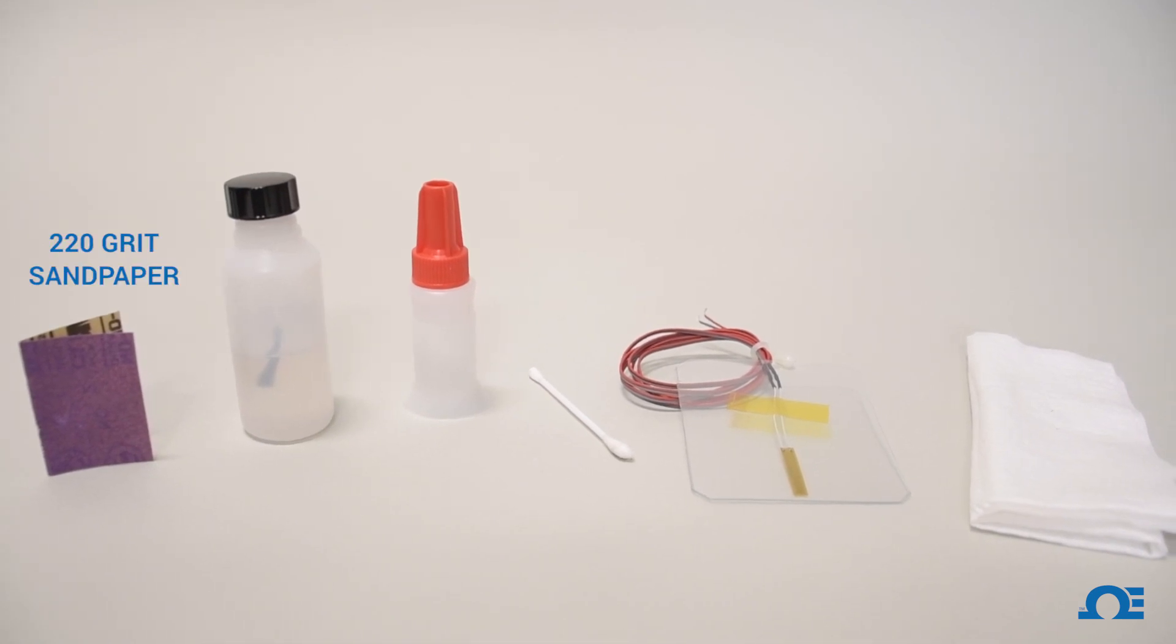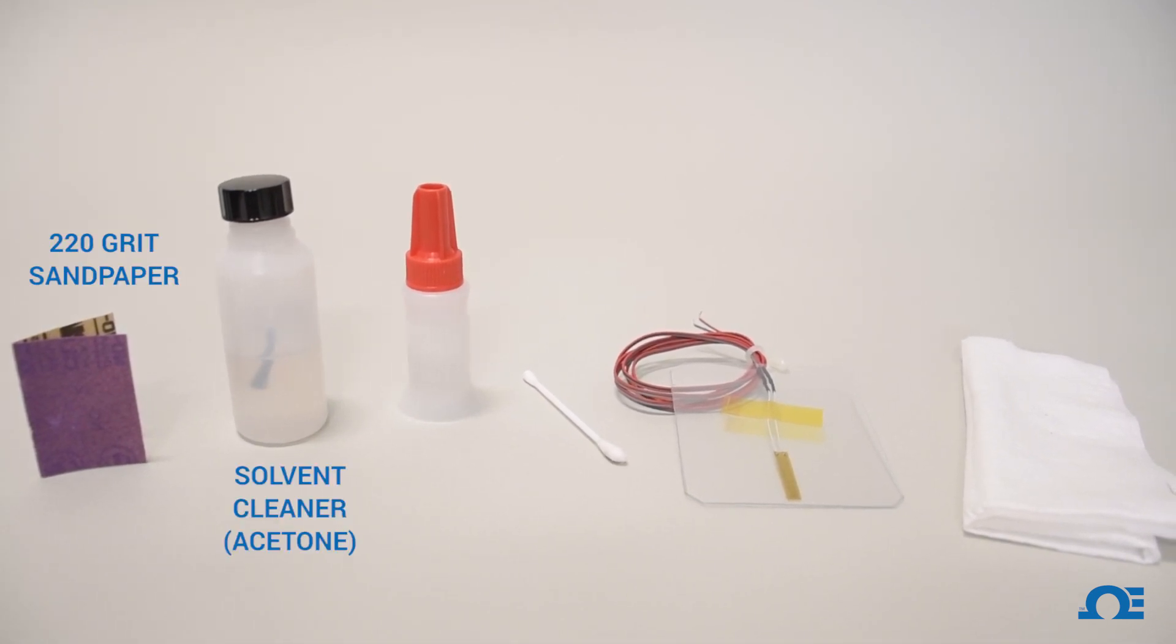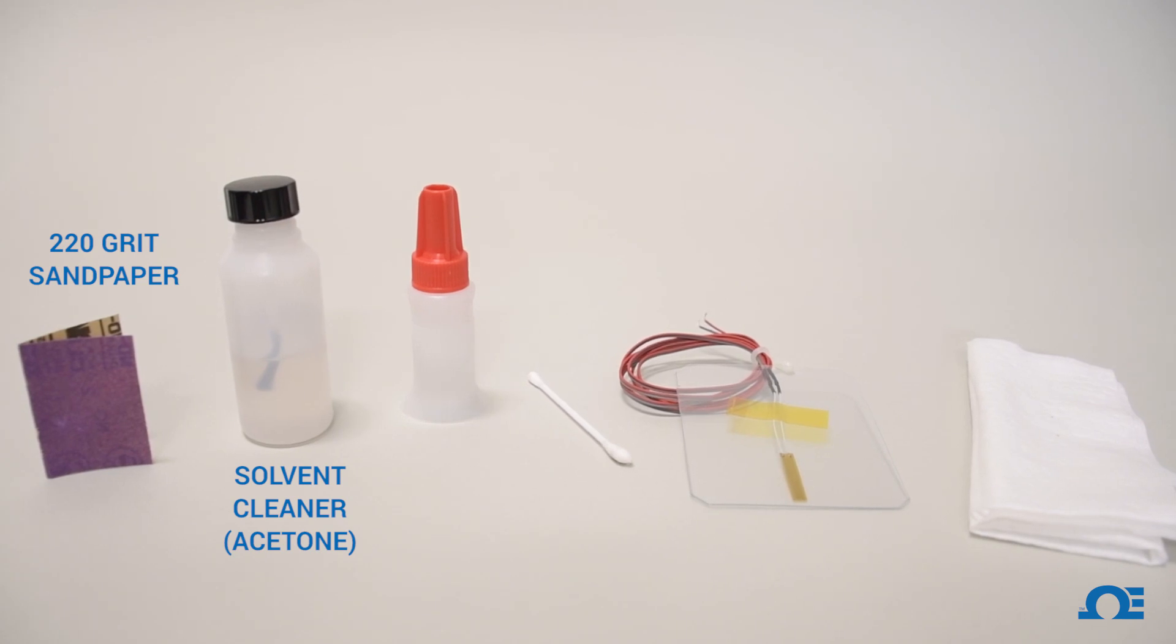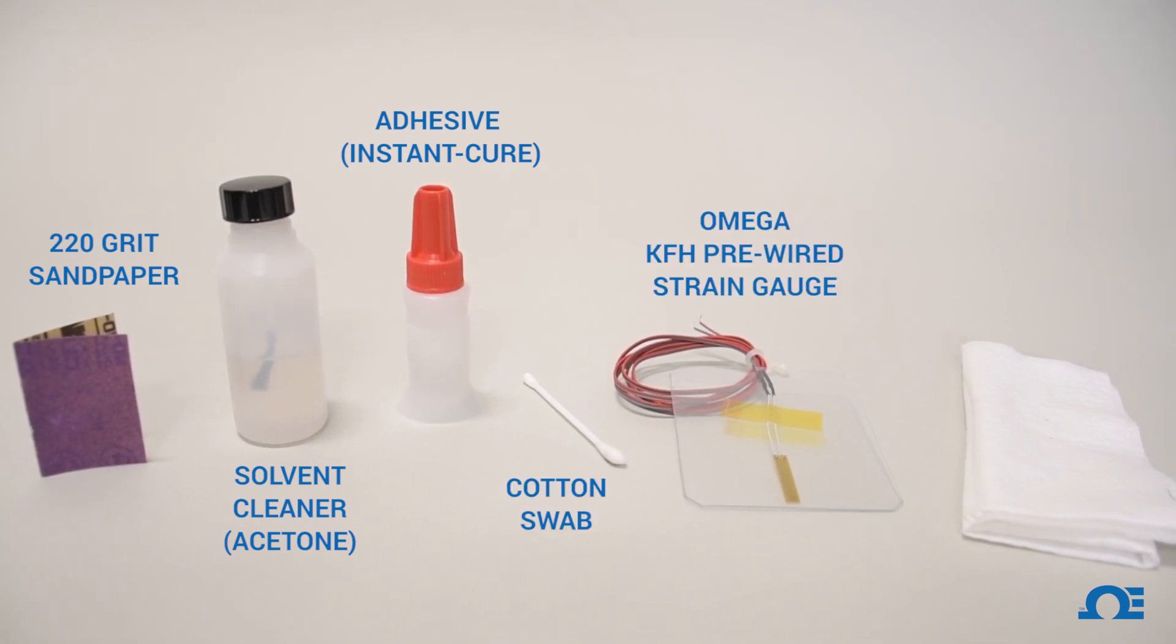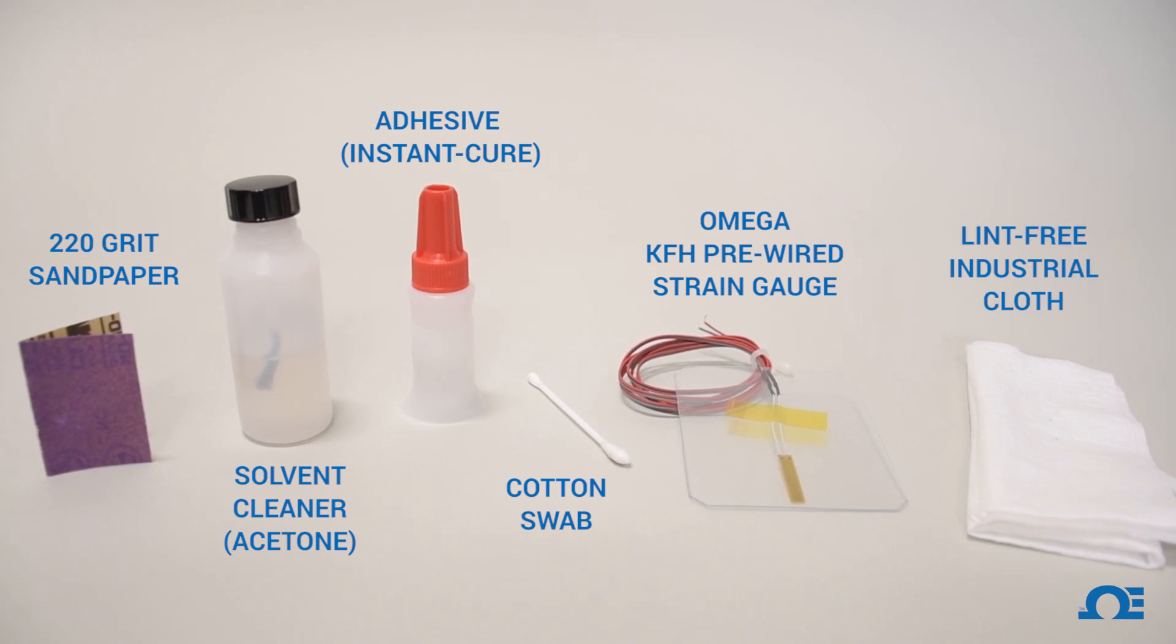First of all, we will need 220 grit sandpaper, solvent cleaner - today I'm going to be using acetone - the SG496 or the SG401 adhesive instant cure, cotton swab, the Omega KFH pre-wired strain gauge, and lint-free industrial cloth.